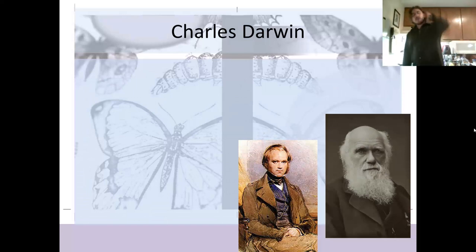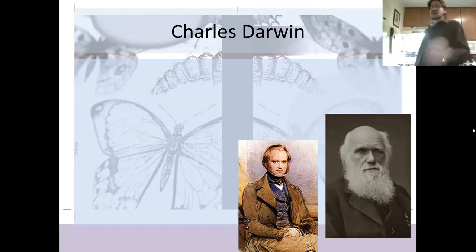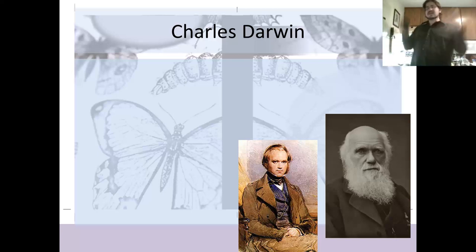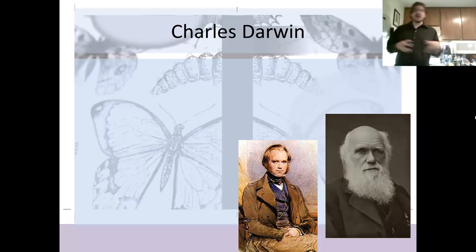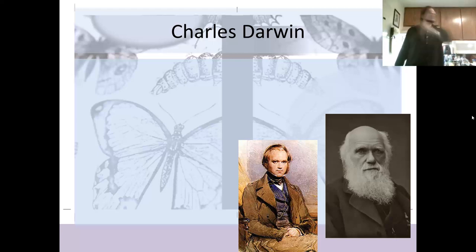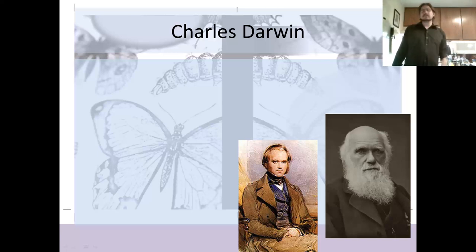When we talk about evolution, the first person we have to talk about is Charles Darwin. Darwin is the first person to publish a concise scientific explanation for the origin of species and evolutionary theory. This isn't to say Darwin is the only one who thought of evolution. In fact, I believe it was either his grandfather or granduncle who came upon the idea first, but didn't put it out in scientific terms. There was also another scientist who came up with evolution at the same time — Darwin just got the recognition for it.